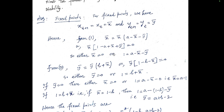If ȳ = 0, then either x̄ = 0, giving equilibrium point E₀ = (0, 0), or 1 = a - x̄, giving x̄ = a - 1, so we get equilibrium point E₁ = (a-1, 0). If 1 = b + x̄, then x̄ = 1 - b.